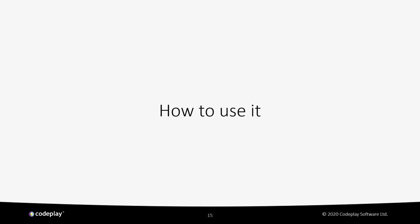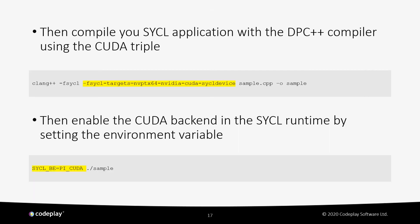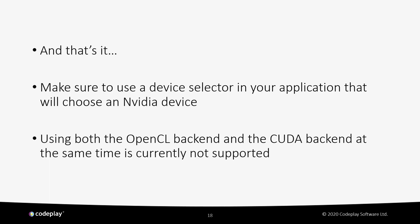To use NVIDIA support in DPC++ for your SYCL applications: first, download or build a DPC++ package — there are daily builds and more stable monthly builds available, along with detailed getting-started instructions. Once installed, compile with the DPC++ compiler as normal but use the CUDA triple nvptx64-nvidia-cuda-sycl device. Then enable the CUDA backend in the SYCL runtime by setting the environment variable SYCL_BE to PI_CUDA. Make sure your SYCL application uses an appropriate device selector to choose an NVIDIA device. Note that using both the OpenCL backend and the CUDA backend at the same time is not yet supported.